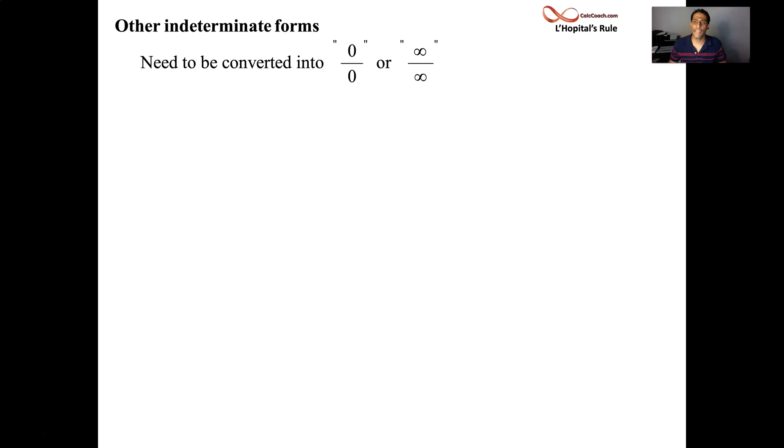Our first one that we're going to look at will be an indeterminate product. Our job? Converted into a format that we can use L'Hopital's Rule on, 0 over 0 or infinity over infinity. So what is an indeterminate product? Well, you have two functions, one of which might be headed towards 0 while the other one might be getting infinitely large.